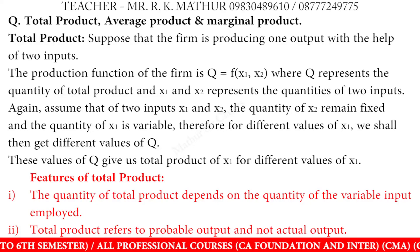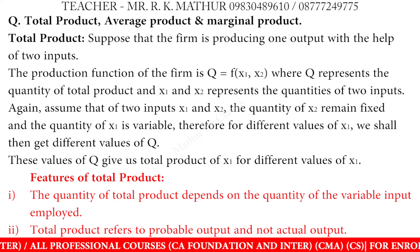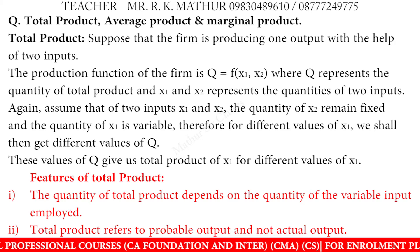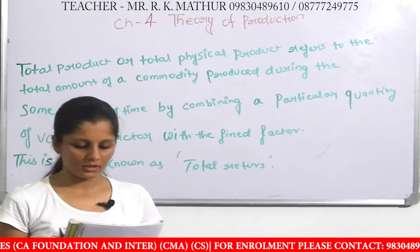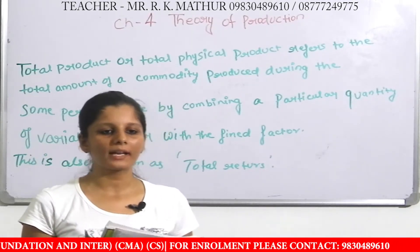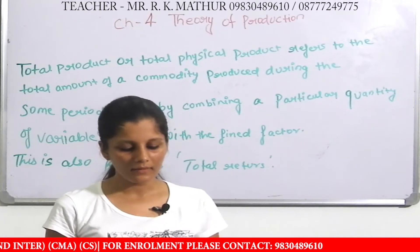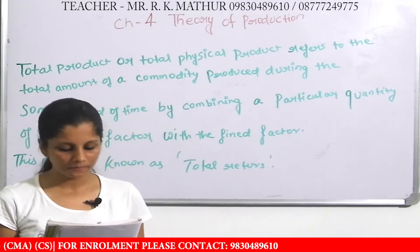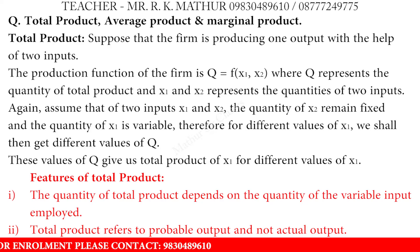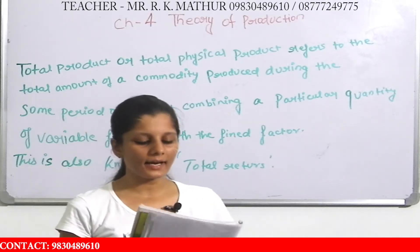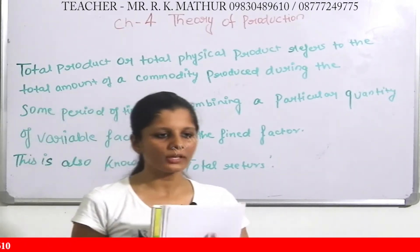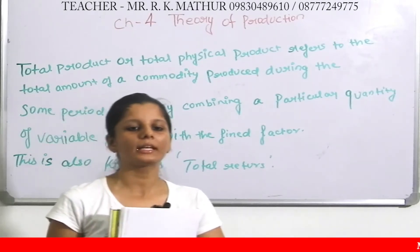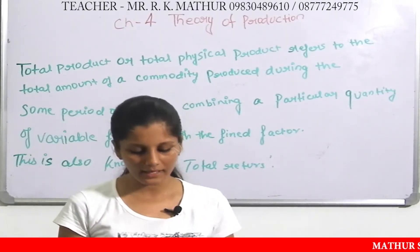The features of total product: The quantity of total product depends on the quantity of variable input employed — our product depends on the input we provide. Also, the total product refers to the probable output, not the actual output. The amount of output may be less than the amount of input suggests.